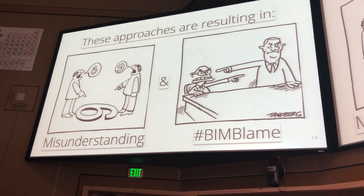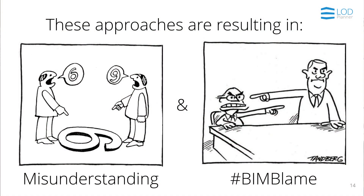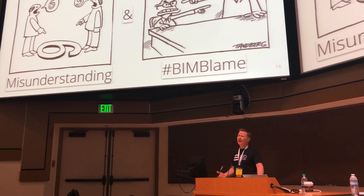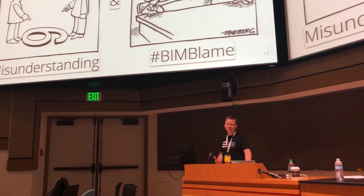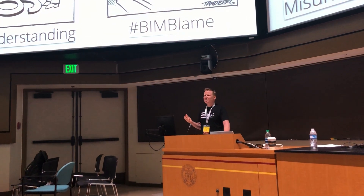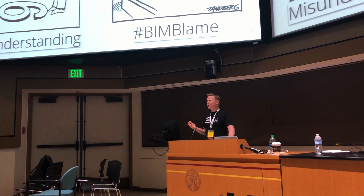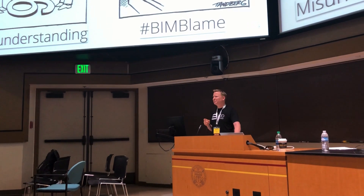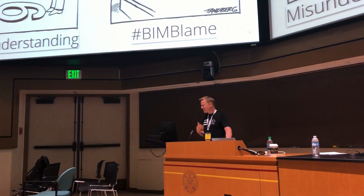What happens is these approaches result in misunderstandings — people calling things differently. This guy thinks it's a six, the other guy thinks it's a nine. And then what we call BIM blame: the finger pointing happens and BIM gets the blame. BIM was going to save us time and money, but it ended up costing more and creating a lot more problems. And wouldn't it be a better world if we didn't have it? Everyone knows it's going to change the world in five years — the standard five-year period. If you're not doing BIM in five years, you'll be out of business. Standard approach. So: BIM blame.